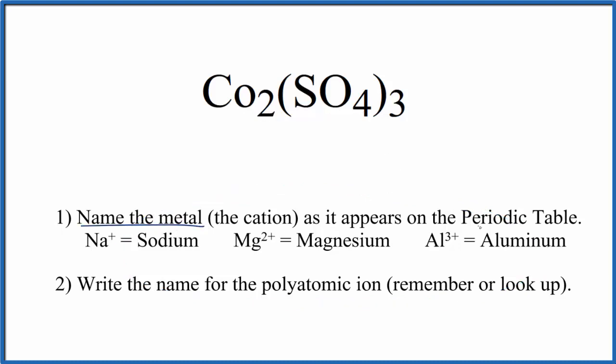First, we write the name for the metal as it appears on the periodic table. Co, that's cobalt. Next, we write the name for the polyatomic ion. You either remember that this SO₄ is the sulfate ion, or if you're allowed, you look it up. So far, we have cobalt sulfate as the name for Co₂(SO₄)₃.